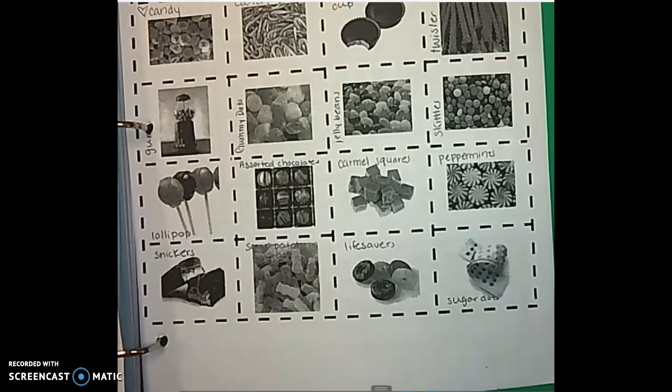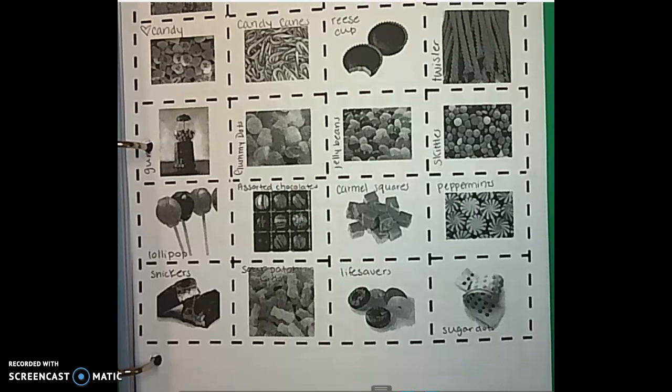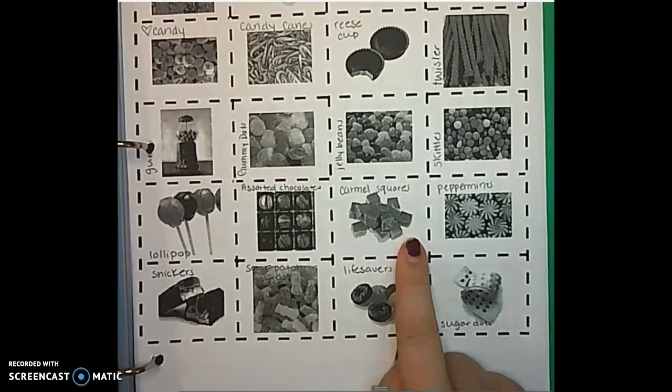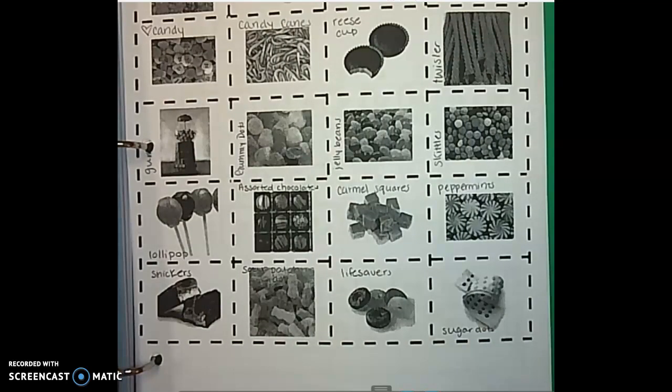Now these categories, remember they're going to have similar qualities or characteristics. So if you have assorted chocolates and caramel squares in the same category, then you need to have other candy in that category that is going to be similar to chocolate and caramel.